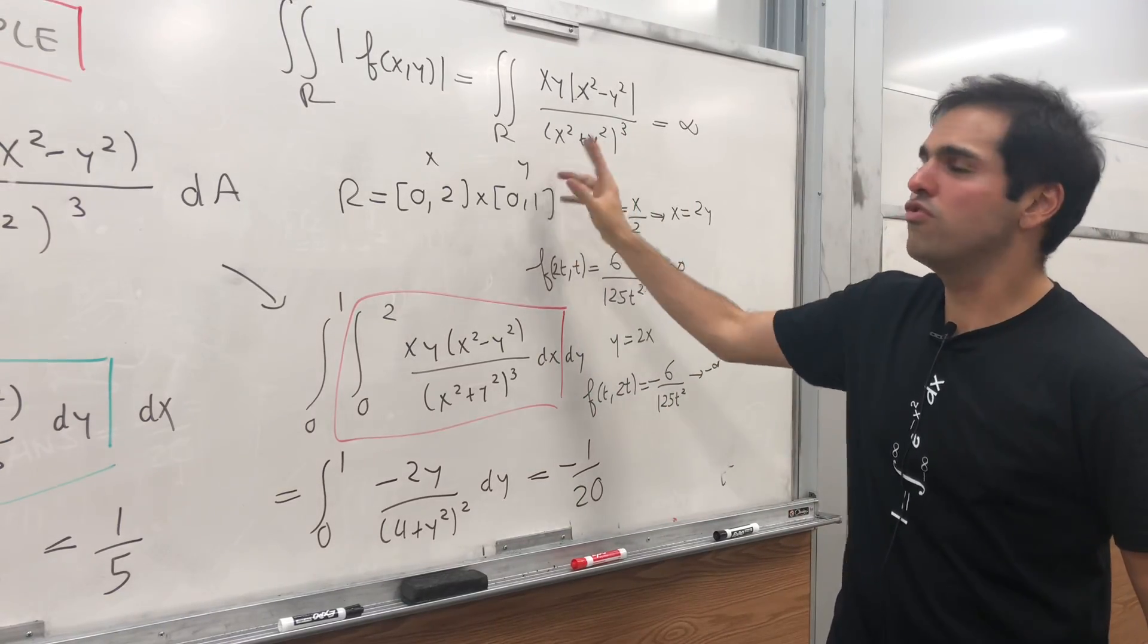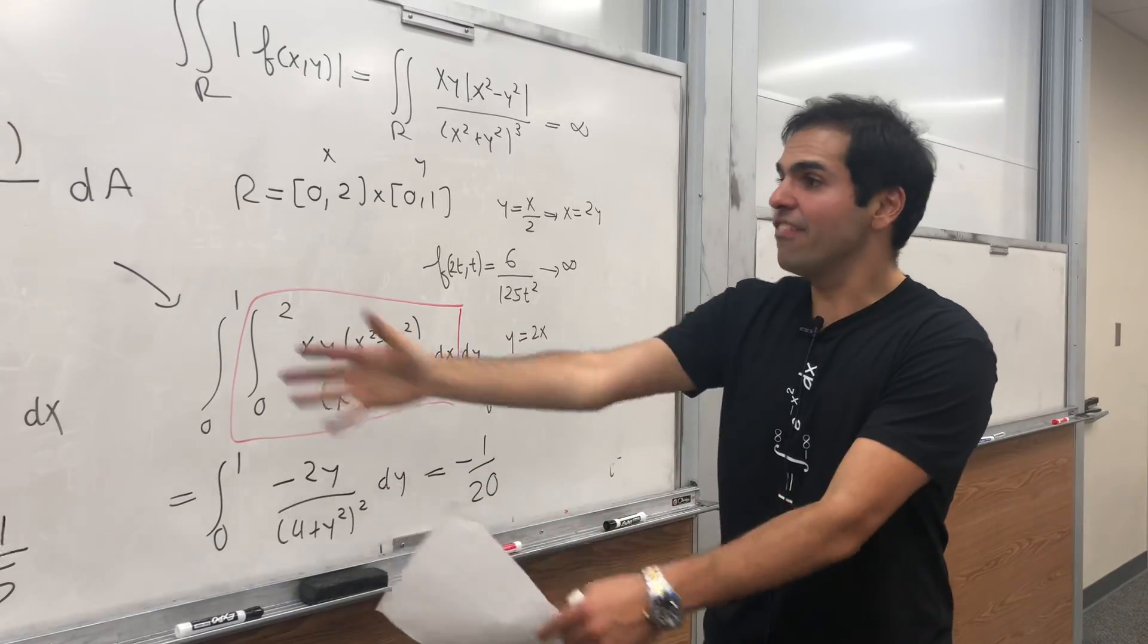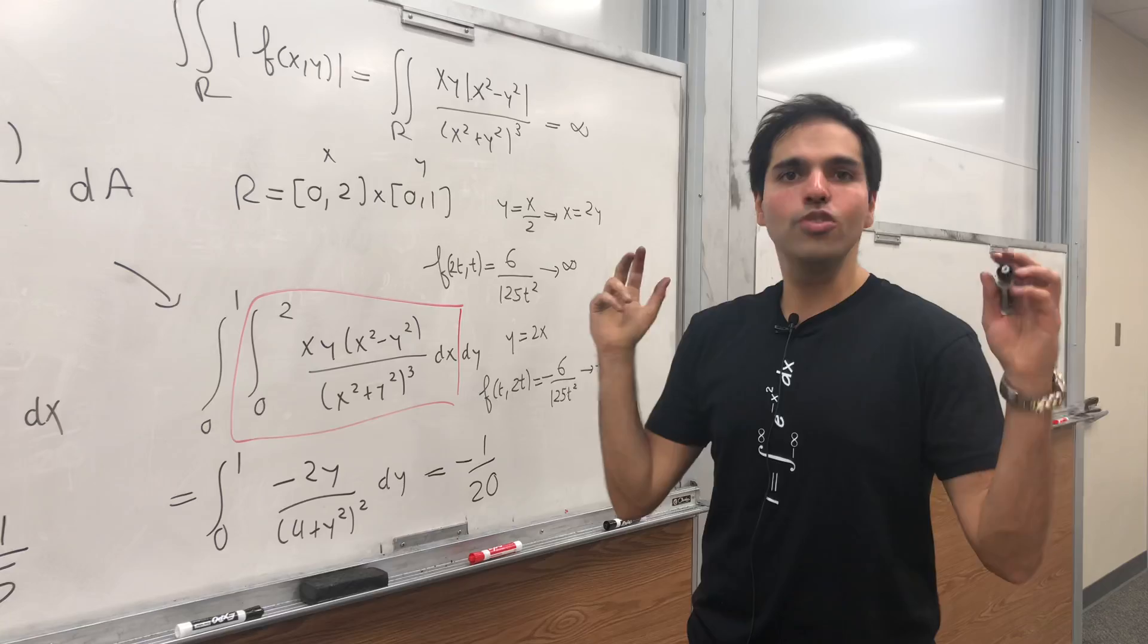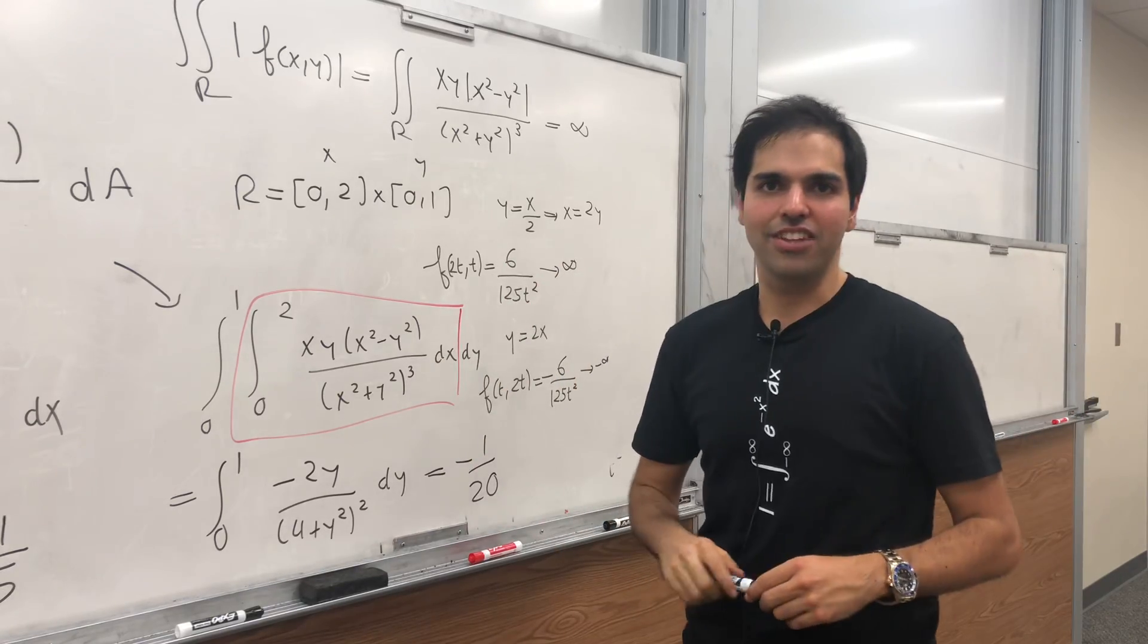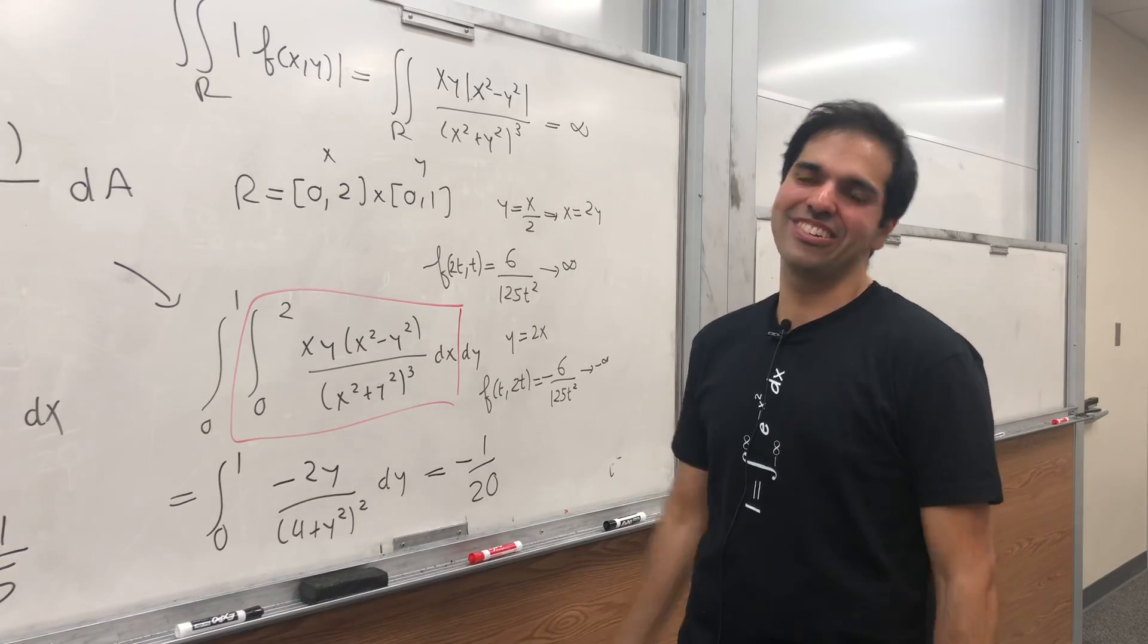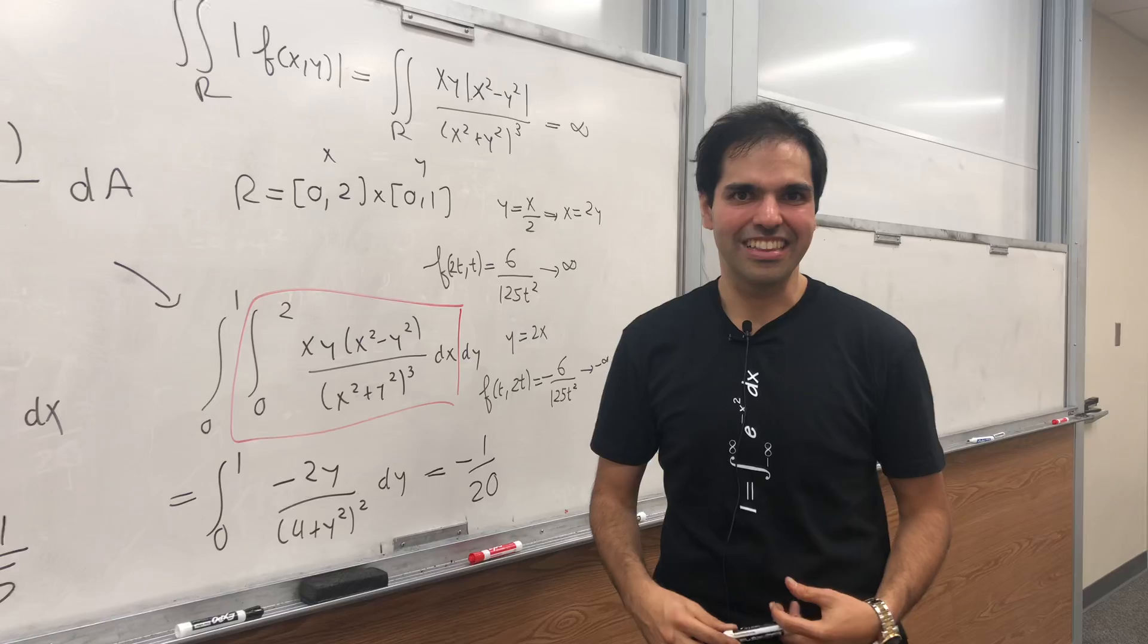One of the assumptions of Fubini's theorem is not true. And therefore, we have this weird thing that happens here, which means that for Fubini, you technically have to check all the assumptions. But I know in multivariable, no one cares. Everything is integrable. So that's why in multivariable, you don't have to worry about this.